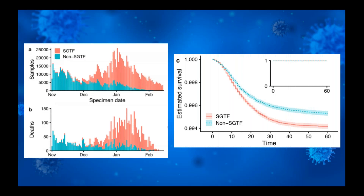As important as this information is, I want us all to remember that as we hear about the likelihood that B.1.1.7 causes more severe disease and death, we have to step back at the overall survival. More than 99.4% of both groups survived, and we simply can't lose sight of this. It's an important difference, but a slightly more subtle one, especially when we're thinking in the big picture.